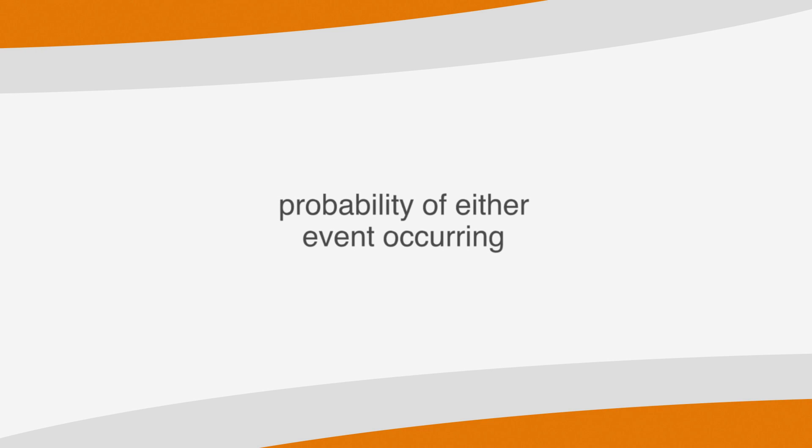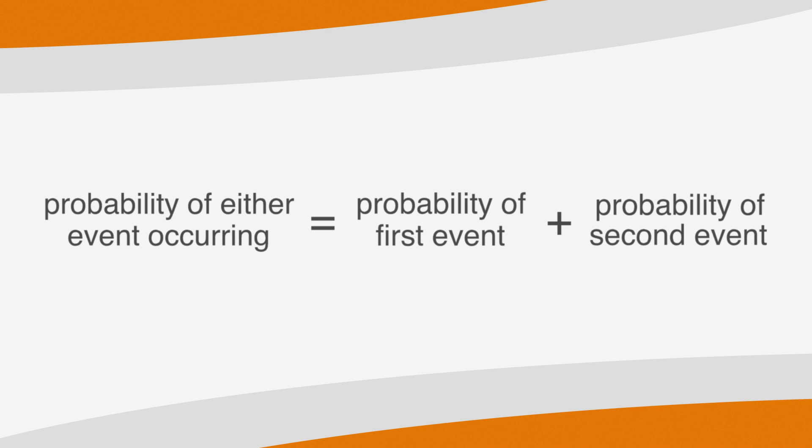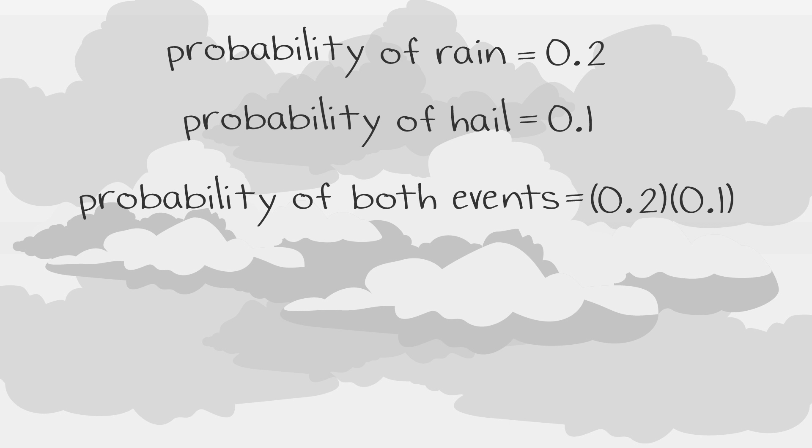There's one more type of probability problem on the SAT, and it asks for the probability that one of two events will occur. We can solve for this by adding the probabilities of each happening. So the probability that either event will occur is equal to the probability of the first event plus the probability of the second event.